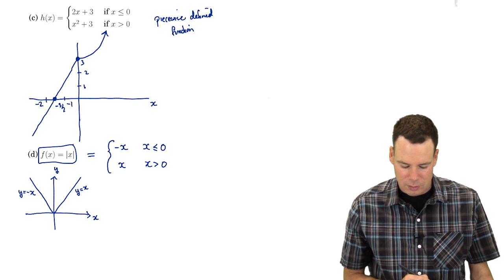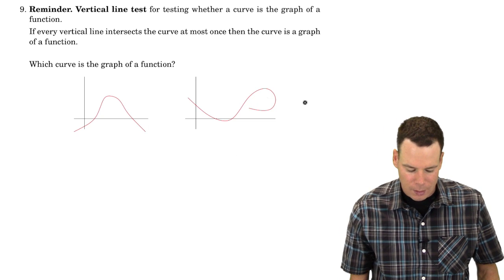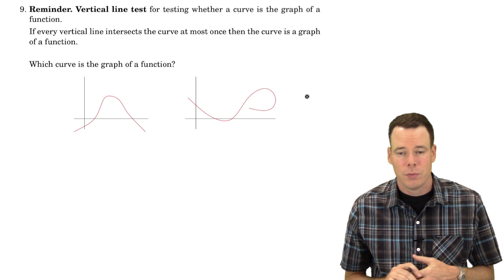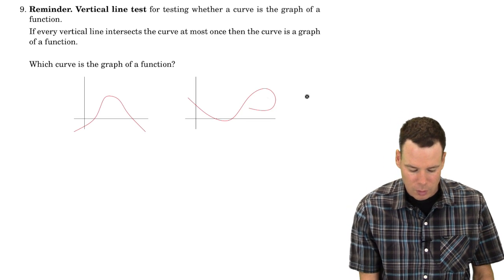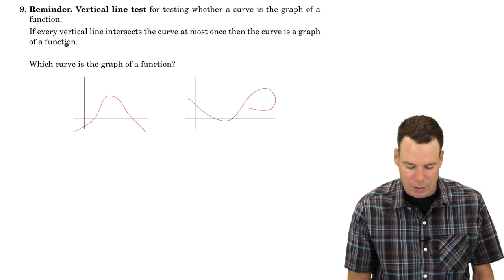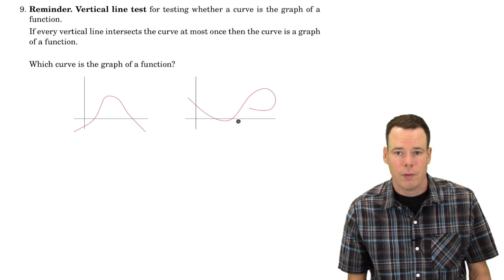Alright, so before we finish this section, I just want to wrap it up with a reminder of the vertical line test. So let's suppose we're given a graph. And we want to know whether it is the graph of a function or not. Well, if every vertical line intersects the curve at most once, then the curve is the graph of a function. So which of the following here is the graph of a function?